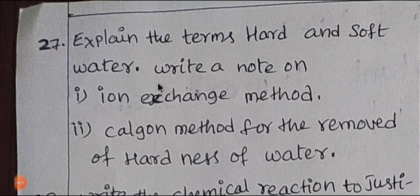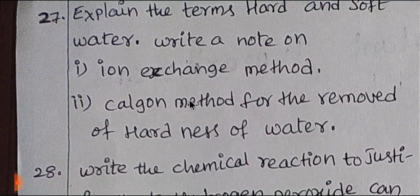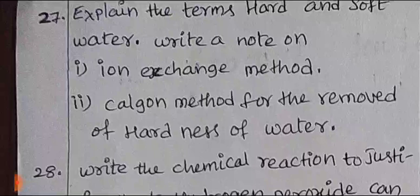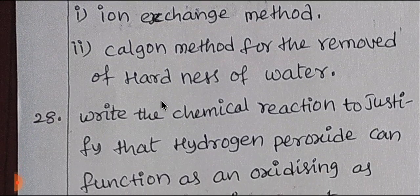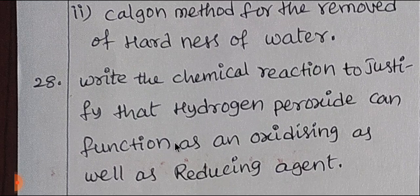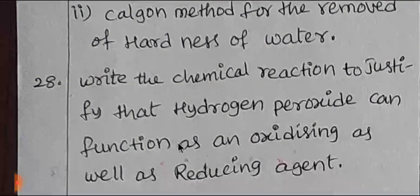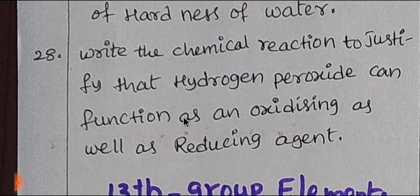Next, for Hydrogen and its Compounds, explain the terms hard water and soft water. Write a note on the ion exchange method and the Calgon method. Topics include soft water, hard water, Calgon method, and ion exchange method with examples. Next, write the chemical reactions to justify that hydrogen peroxide can function as both an oxidizing agent and a reducing agent, with reactions for each.